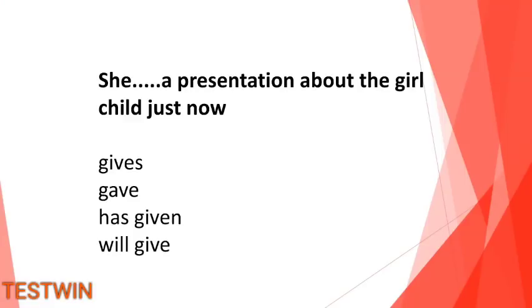Next question: "She ___ a presentation about the girl child just now." The answer is Option 3: she has given a presentation about the girl child just now. The clue words "just now" indicate present perfect tense, so the answer is Option 3.